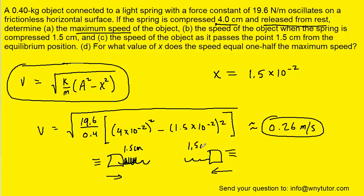So in one case the spring might have been compressed by the 1.5 centimeters and in the other case it might have been stretched by 1.5 centimeters. But again the speed will be the same. So the answer for Parts B and C will be the 0.26 meters per second.